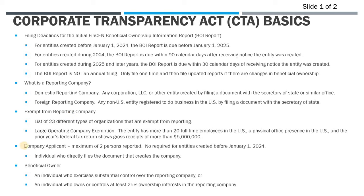What's reported on these returns is company applicant information and beneficial owner information. Company applicants are the individuals who actually file the document to create the company, and the maximum number reported in this category is two. Importantly, you do not have to file company applicant information if the entity was created before January 1, 2024.